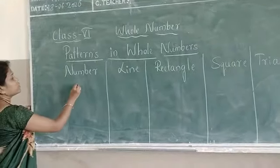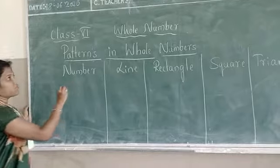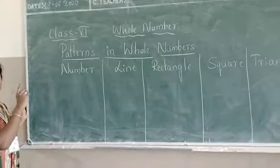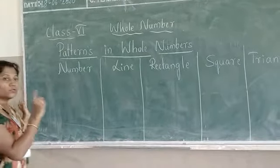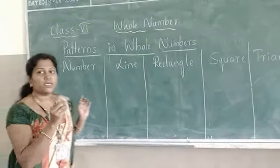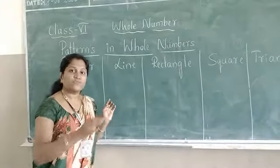Whole numbers start from 0, 1, 2, 3, 4... to infinity.